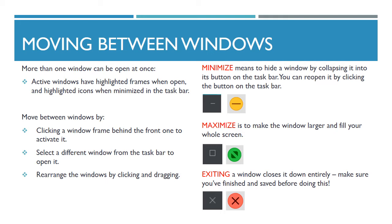Apple computers use traffic lights instead of symbols, though when you hover your cursor over the buttons, symbols will appear in them. Yellow is to minimize, green to maximize, and red is to exit — yellow to pause, green to go or keep going, and red to stop.